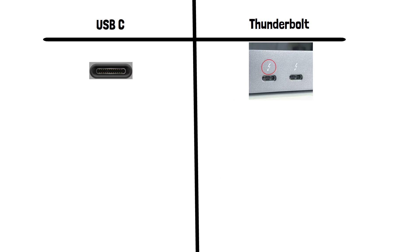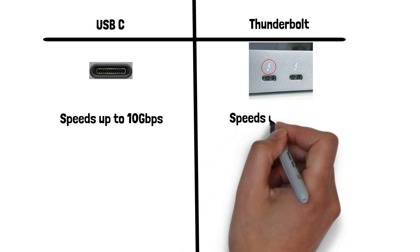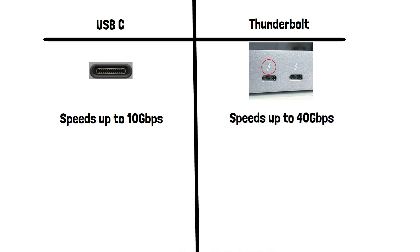Now let's look at speed. USB-C supports varying levels of data transfer speeds depending on the version, with the latest version supporting up to 10 gigabits per second. Thunderbolt 4, which is the latest Thunderbolt version, offers blazing fast data transfer speeds of up to 40 gigabits per second, making it significantly faster than standard USB-C.